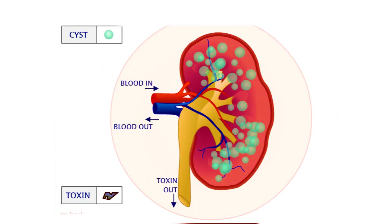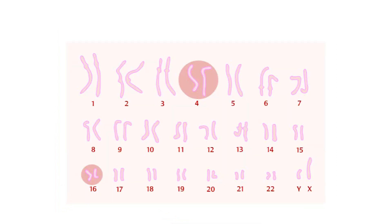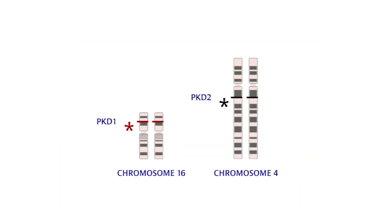In autosomal dominant polycystic kidney disease, there are at least two genes which, if mutated, can cause cysts to grow in the kidneys. These genes are PKD1 on chromosome 16 and PKD2 on chromosome 4.